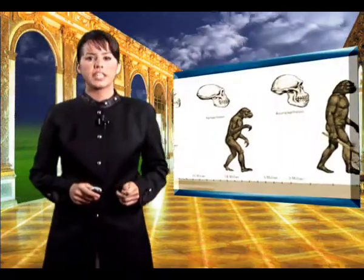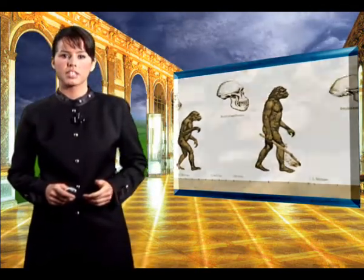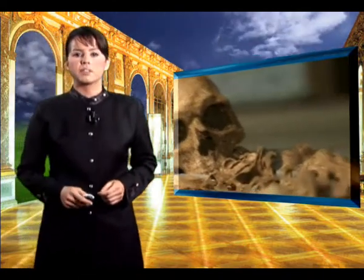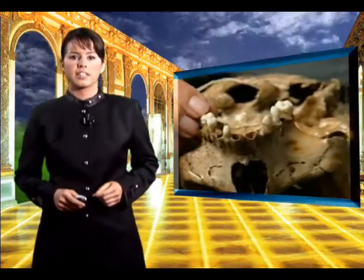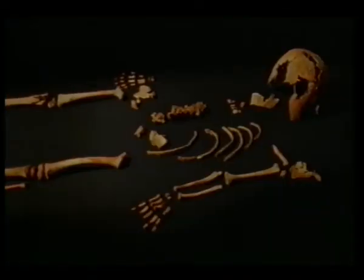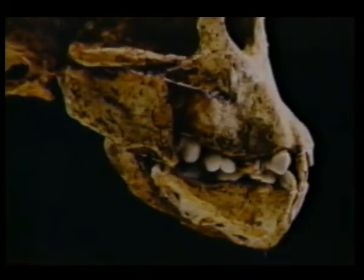The biased interpretation of fossils and outright publication of many imaginary reconstructions are an indication of how frequently evolutionists have recourse to tricks. Yet these seem innocent when compared to deliberate forgeries that have been perpetrated in the history of evolution. In the next presentation we will see this forgery.